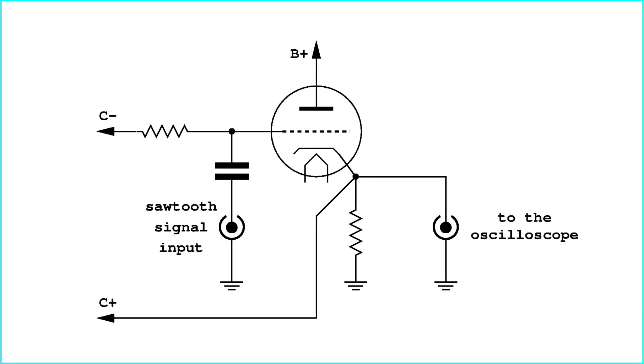This is the basic schematics of the tube tracer. The sawtooth signal would be applied to the grid using a capacitor, while the average voltage would be controlled by an external power supply.